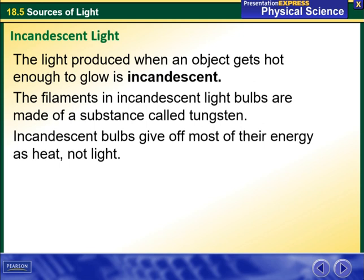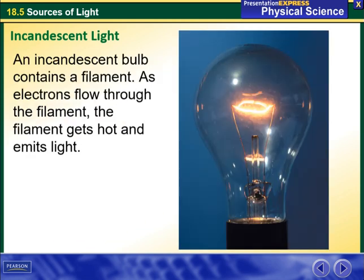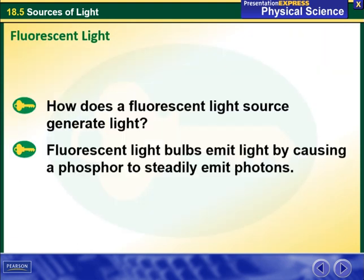Incandescent bulbs give off most of their energy as heat, not light. An incandescent bulb contains a filament. As electrons flow through the filament, the filament gets hot and emits light. How does a fluorescent light source generate light?